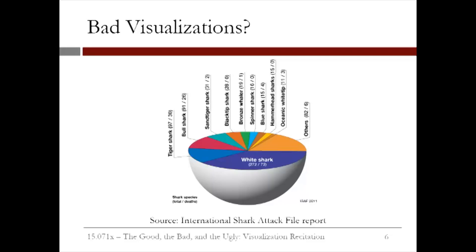Next, there is an issue of label orientation. While the caption 'shark species total/death' and the label 'white shark' are horizontal, the rest are vertical and hard to read. They are in order, however, which does help, although the 'others' segment is unfortunately large — it is unclear if it is due to there being a lot of attacks by many species, or if the species is not known for many attacks. Finally, at a glance, it is hard to distinguish the magnitude of differences between the orange, green, blue, and brown segments in the top part of the pie chart, and we must resort to the labels to distinguish between them.